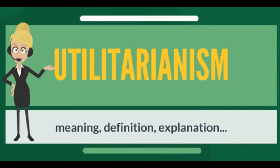Utilitarianism is distinctly different from other forms of consequentialism such as egoism, as it considers all interests equally. Proponents of utilitarianism have been split about whether individual acts should conform to utility — act utilitarianism — or whether agents should conform to ethical rules — rule utilitarianism. Utilitarians additionally remain split about whether utility should be calculated as an aggregate — total utilitarianism — or an average — average utilitarianism.